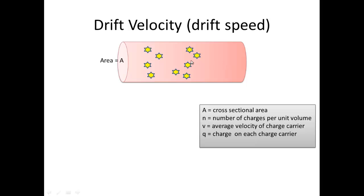Now let's define some terms. We have the cross-sectional area A, which is the area of the wire. We have a number of charges, we need to know n, which is the number of charges per unit volume. V is the drift velocity, and q is the charge on each electron.